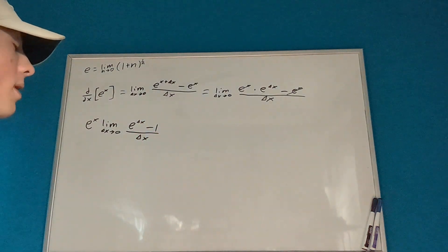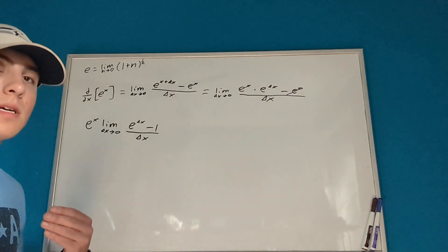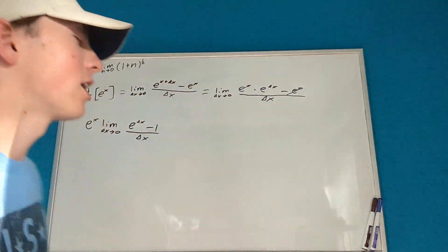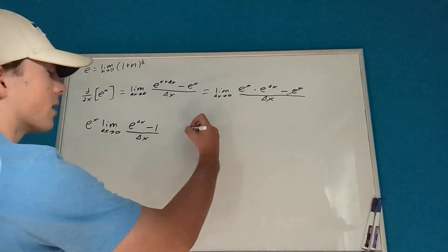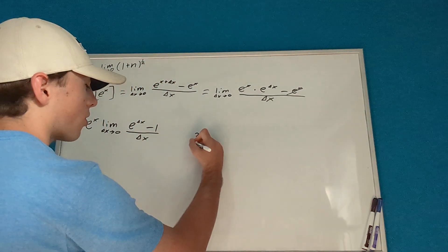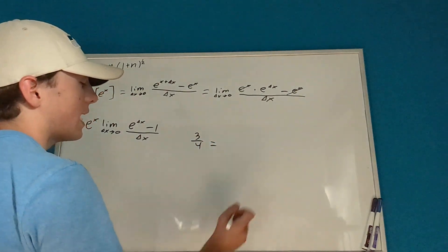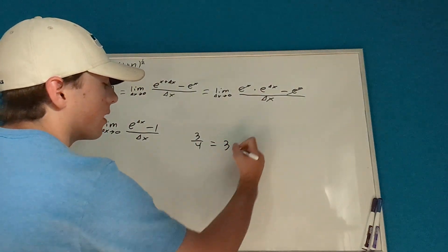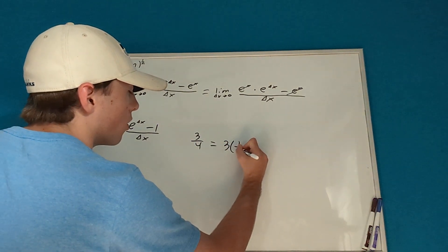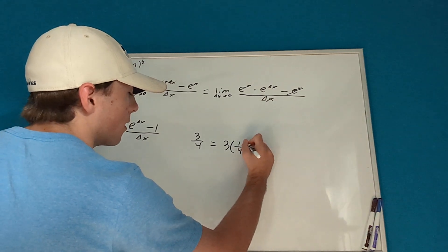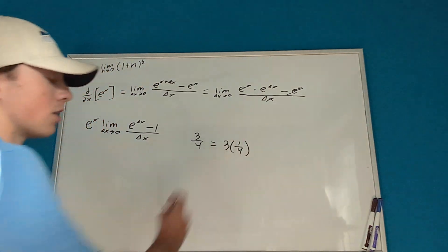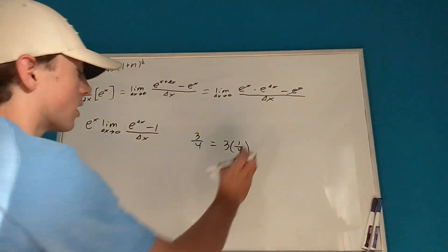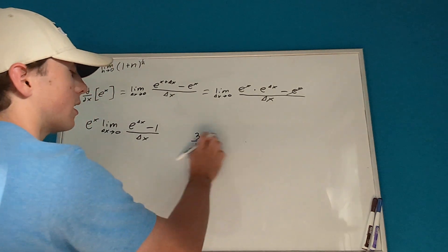The denominator remains unchanged because if you have a fraction like 3 over 4, you can take out a 3 and rewrite it as 3 times 1 over 4, and the denominator remains unchanged. We're essentially doing the same thing here.